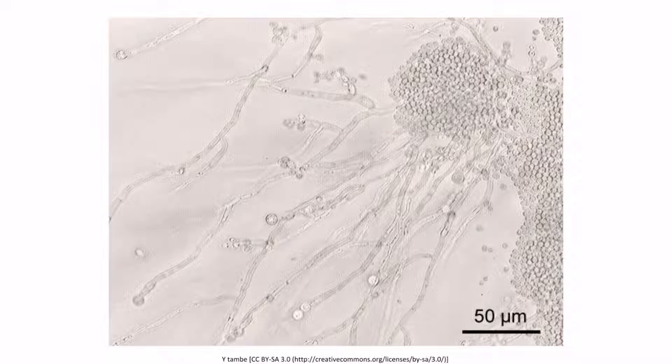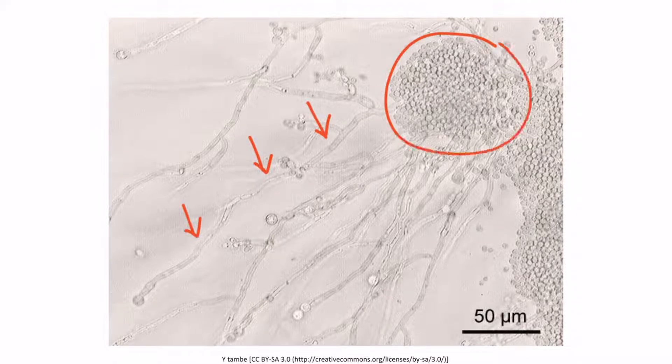This is an image of pseudohyphae and budding yeast. You can see the pseudohyphae right here, and the circular budding yeast cells over here. You may also hear the budding yeast cells of Candida referred to as blastoconidia — this is a high yield word to be familiar with. So you may see pseudohyphae and blastoconidia.